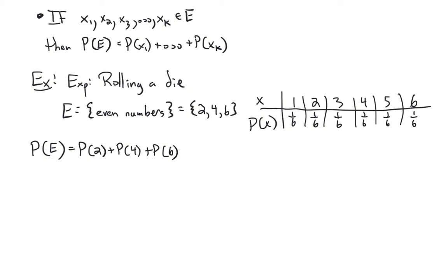Since rolling each face of a fair die is equally likely, the total probability of 1 is split into 6 equal parts, so each outcome has probability 1/6. Therefore, P(even) = 1/6 + 1/6 + 1/6 = 3/6, which is one half, or 0.5, or 50%. We can use this idea to figure out the probability of any event.